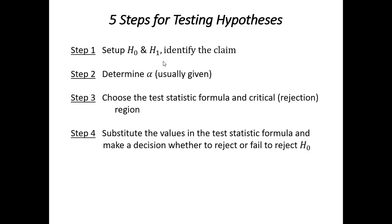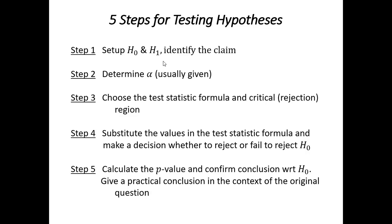In step 4, we substitute the values that we get from our sample in the test statistic formula and then make a decision whether to reject or fail to reject the null hypothesis. I call that the statistical conclusion. And then in step 5, we give the p-value. You could use this to confirm the conclusion that you obtained in step 4. And then also in step 5, we try to give a practical conclusion in the context of the original question. We'll be looking at many examples of this hypothesis testing in some other videos. Here, I'm just sort of giving you a quick overview of chapter 8.